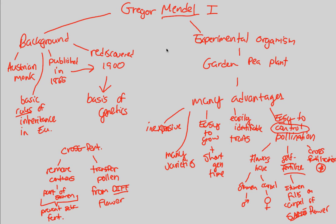Overall, in this first video on Gregor Mendel, it's important to understand his background — an Austrian monk whose work was published in 1865 and only rediscovered around 1900. We've established the basic rules of inheritance and the basis of genetics through his work. The experimental organism he chose was the garden pea plant due to its many advantages, most notably the easy control of pollination through cross-fertilization — removing the anthers, preventing self-fertilization, and transferring pollen from a different flower to observe results.